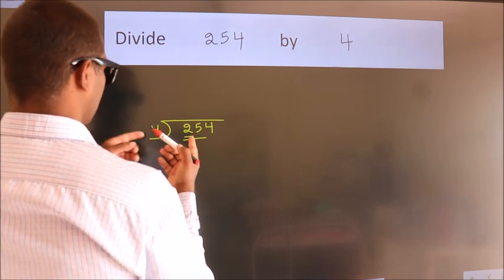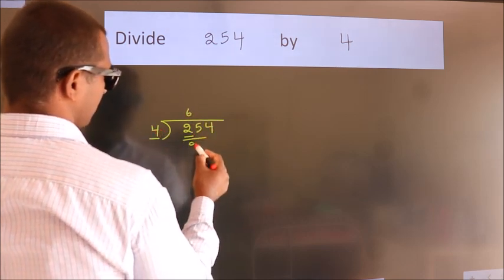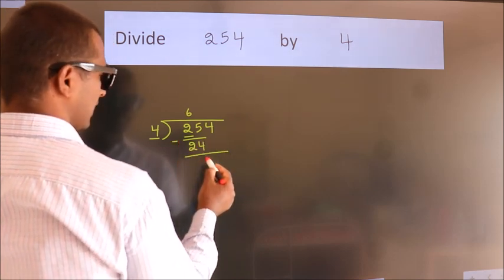A number close to 25 in the 4 table is 4×6=24. Now we should subtract. We get 1.